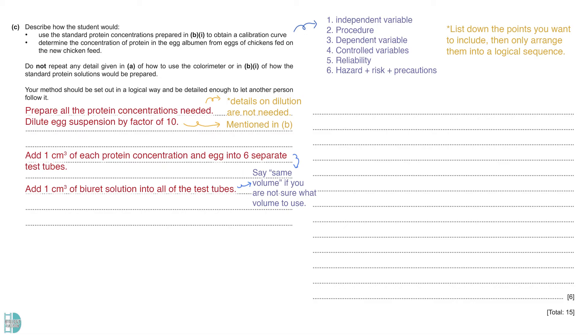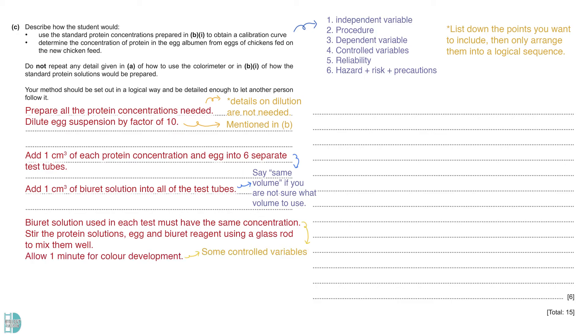If you are not sure what is the logical volume to use, you can just say that you add the same volume. We can add another control variable here. The Burette solution used in each test must have the same concentration. Stir the protein solutions, egg and Burette reagent using a glass rod to mix them well. Allow 1 minute for color development.